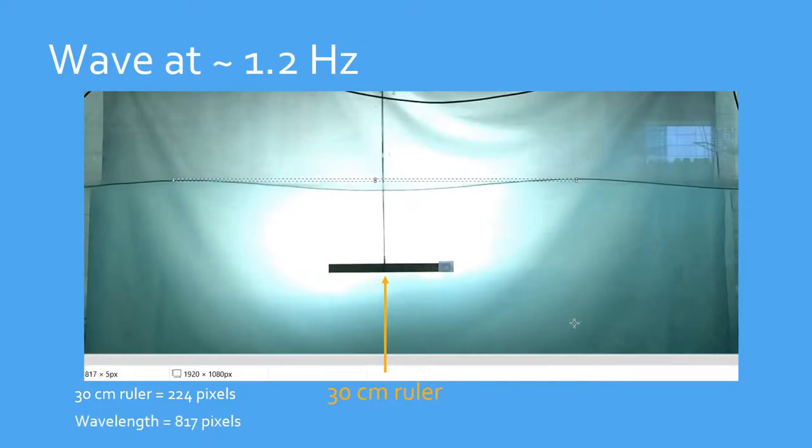By working out the factor of how much the wavelength is bigger than the ruler, we can then multiply the actual length of the ruler to work out the wavelength in cm. As I said, this is not the most accurate result, but as we will see later, it is not far from reality.